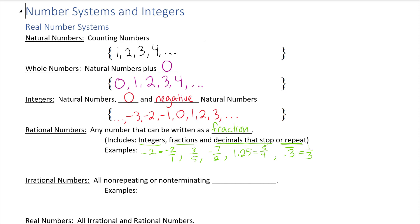The group of irrationals are all the non-repeating, non-terminating decimals — anything that's not rational is by default irrational. For example, pi is 3.14159... and keeps going forever without stopping or repeating. A dead giveaway is that we had to use a symbol — we couldn't just write the number because it doesn't stop or repeat.